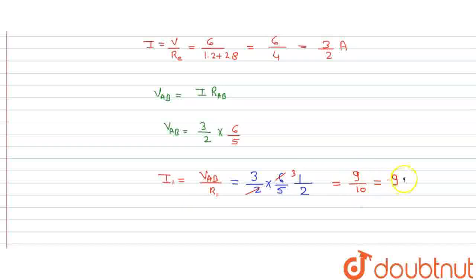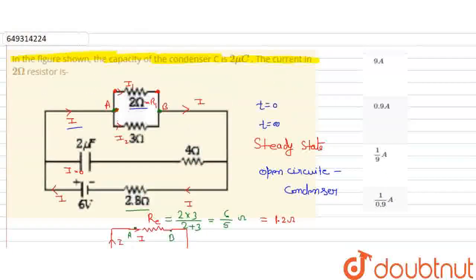This means 0.9 amperes. So I1 current we have found is 0.9 amperes. Looking at options A, B, C, and D, B is the right option. Thank you students.